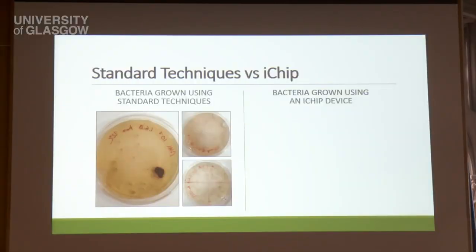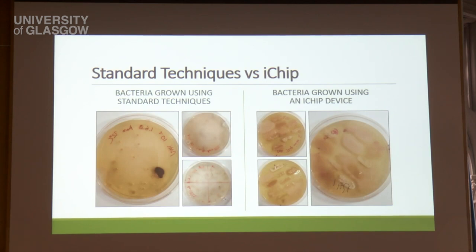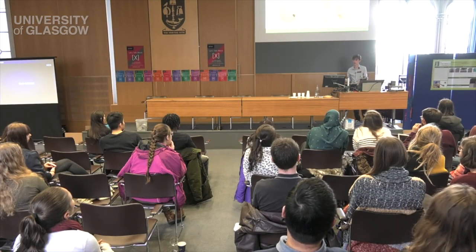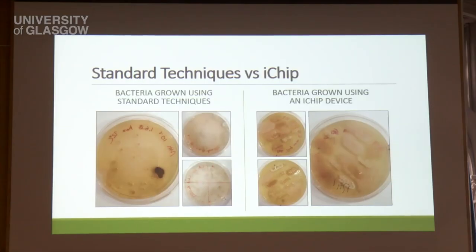You can see that when we use standard culturing techniques, where bacteria are taken from soil and plated out onto artificial nutrients in a lab, this results in colonies that are mostly cream-coloured or white and have a mucosal texture — which is a fancy way of saying they kind of look like bogies. In contrast, colonies of bacteria recovered using an I-chip tend to show a much wider variety in appearance. We would expect this result, as only a few types of soil bacteria can be grown on artificial nutrients, whereas with an I-chip we can recover a much wider range of soil bacteria, many of which having never been grown before.